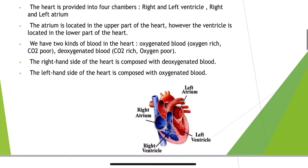We know that the heart is divided into four chambers: the right and left ventricle and the right and left atrium. The atrium is located in the upper part of the heart. However, the ventricle is located in the lower part of the heart.